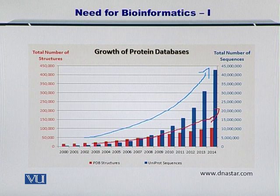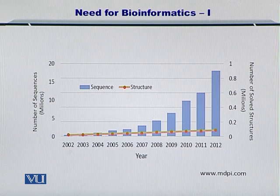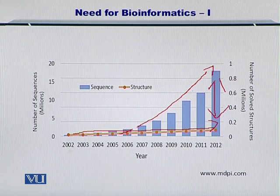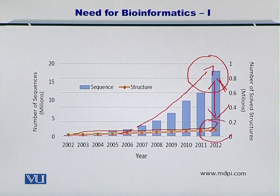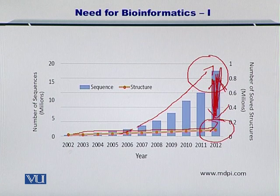Moreover, if you look carefully, the number of protein structures shown here in orange is actually different from the number of sequences. There is a very big difference between the number of protein sequences that are known and the number of protein structures that are known. So using bioinformatics, we can also close this gap and try to find out the structures from the protein sequences. This is another job for the bioinformatician.